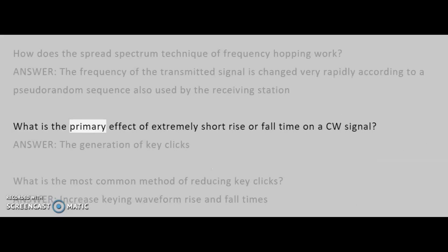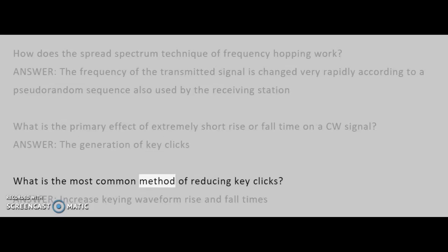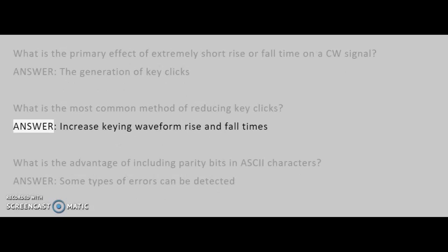What is the primary effect of extremely short rise or fall time on a CW signal? Answer: The generation of key clicks. What is the most common method of reducing key clicks? Answer: Increase keying waveform rise and fall times.